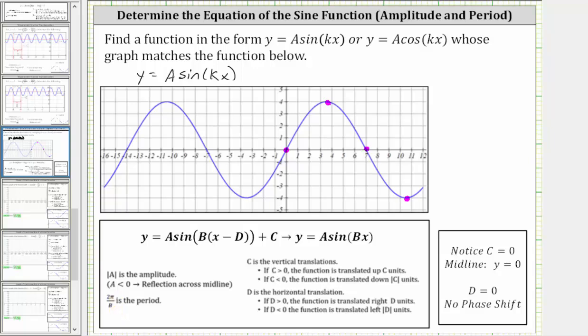So let's first find the amplitude, which is the distance from the midline to a maximum, or the midline to a minimum. Looking at the graph, notice how the distance from the midline to this maximum is four units, as well as the distance from the midline to the minimum. This indicates the absolute value of a, or the amplitude, is equal to positive four.